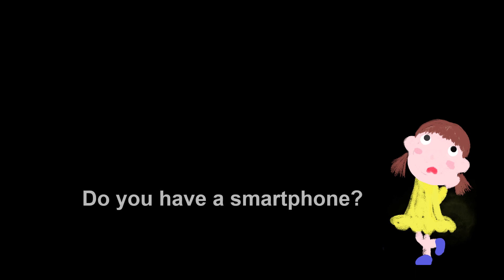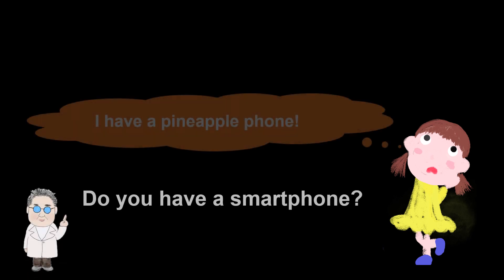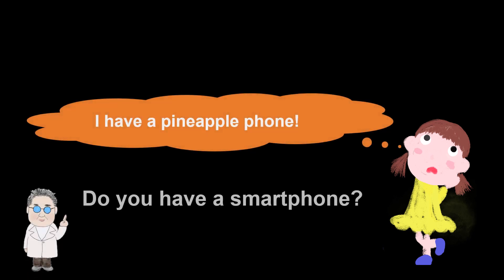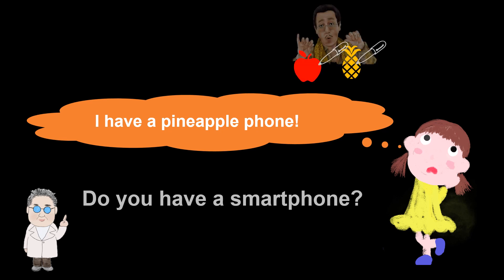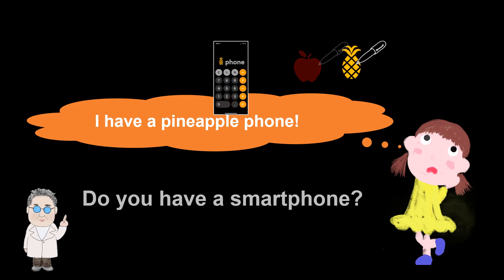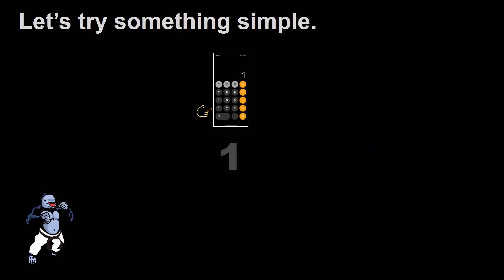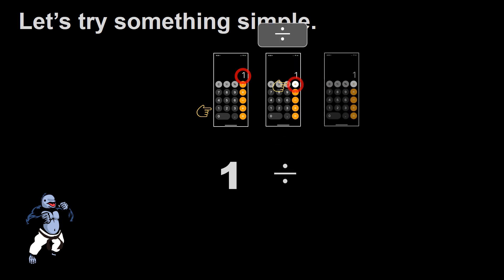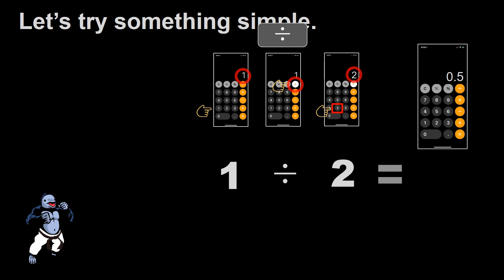Do you have a smartphone? I have a pineapple phone. Given the new calculators, we've got an interesting tool. This will be used for quantum computer technology and artificial ego. First, please take out the smartphones you all have and try typing 1 divided by 2. Yes, the answer should be 0.5.